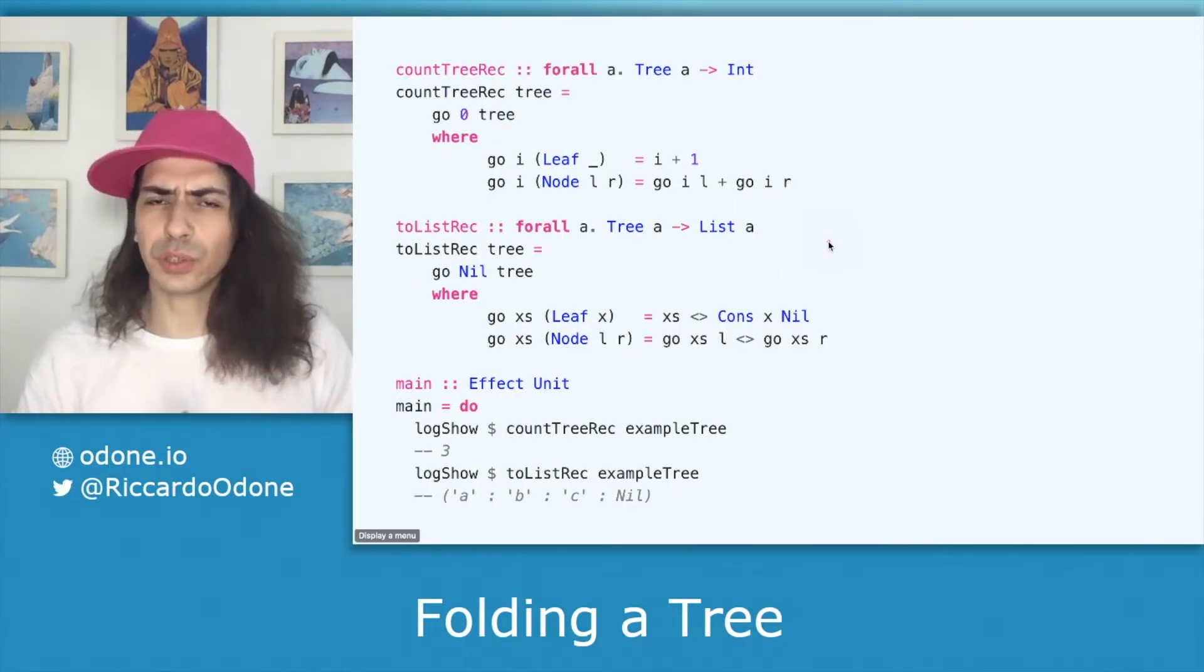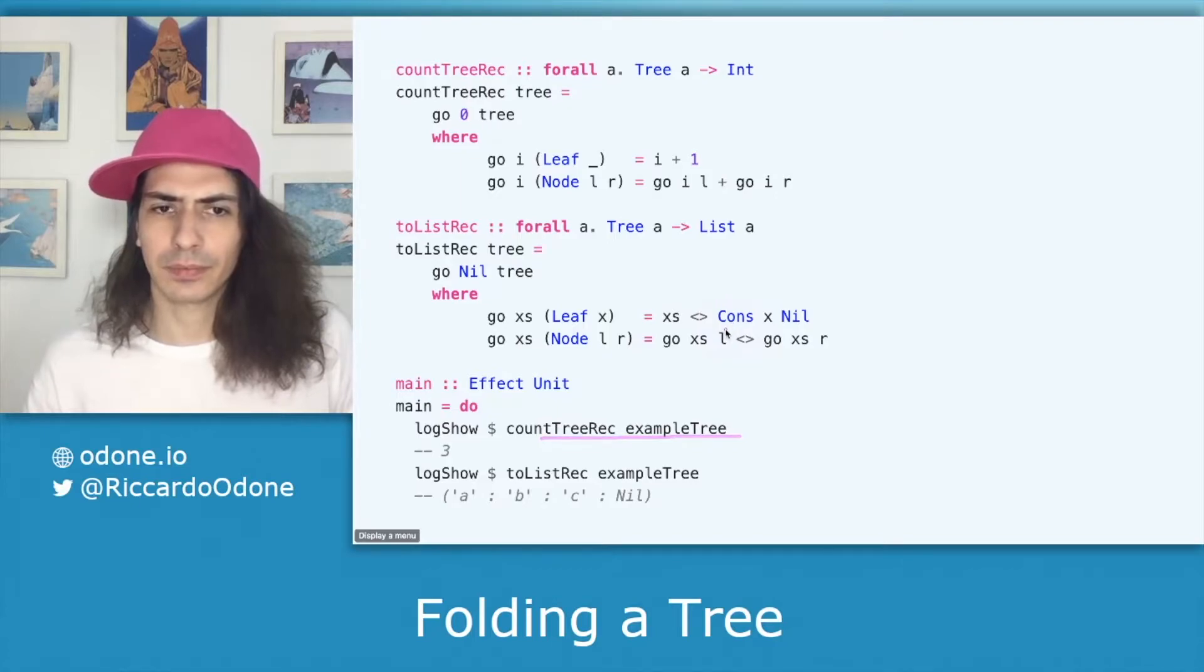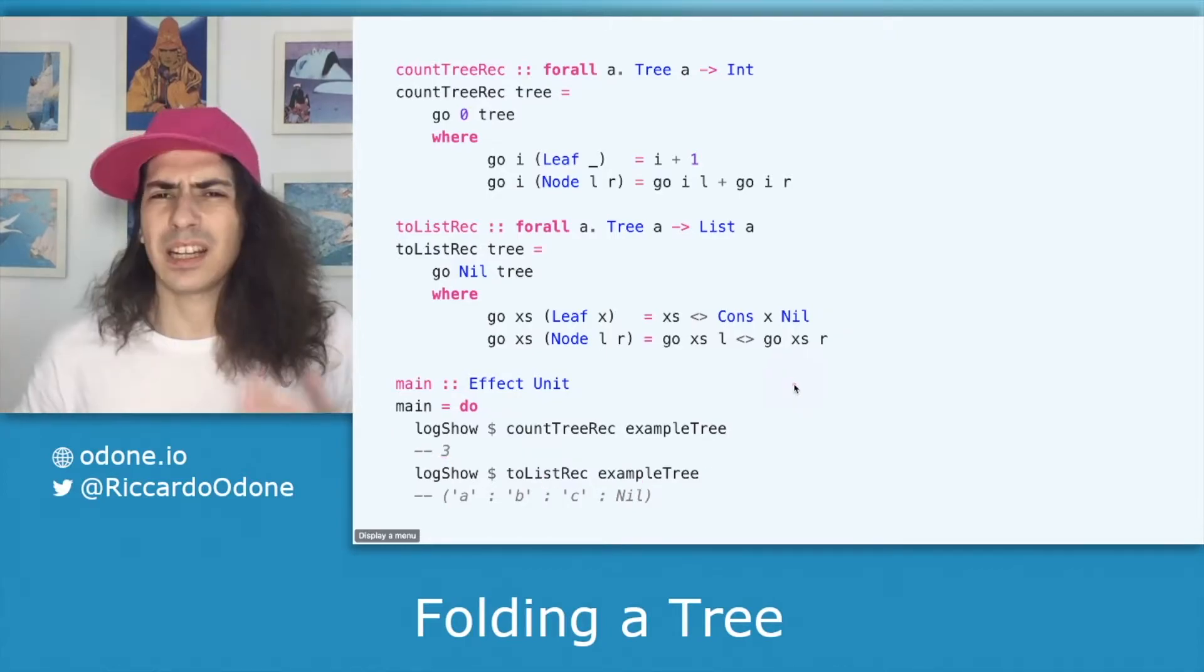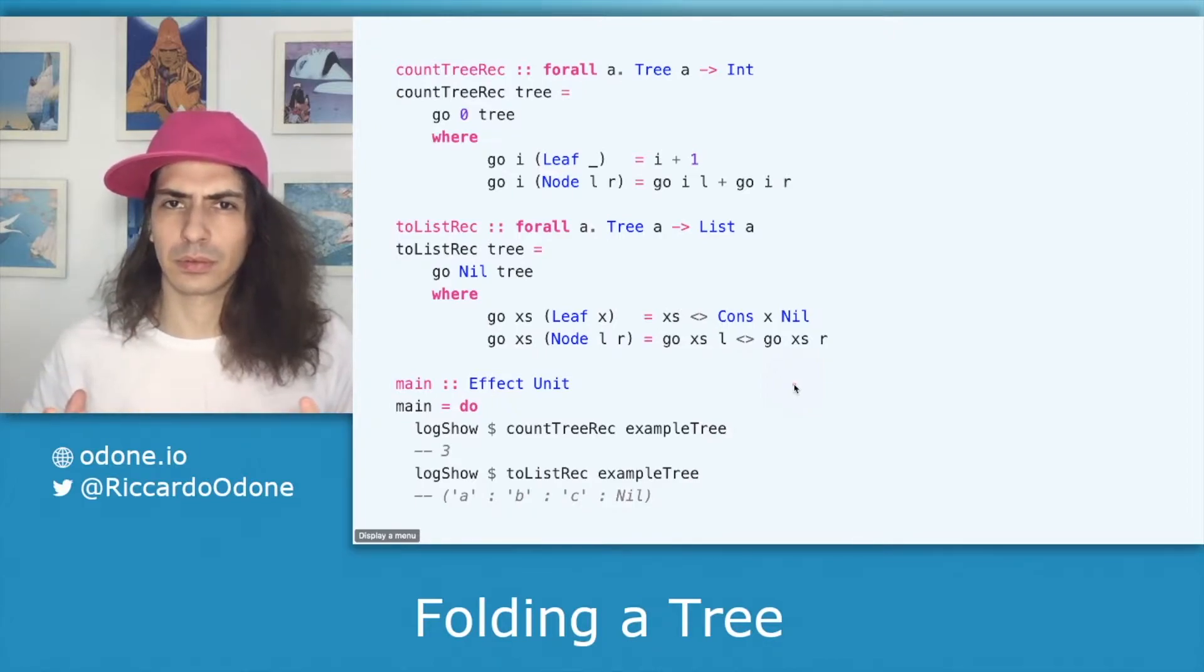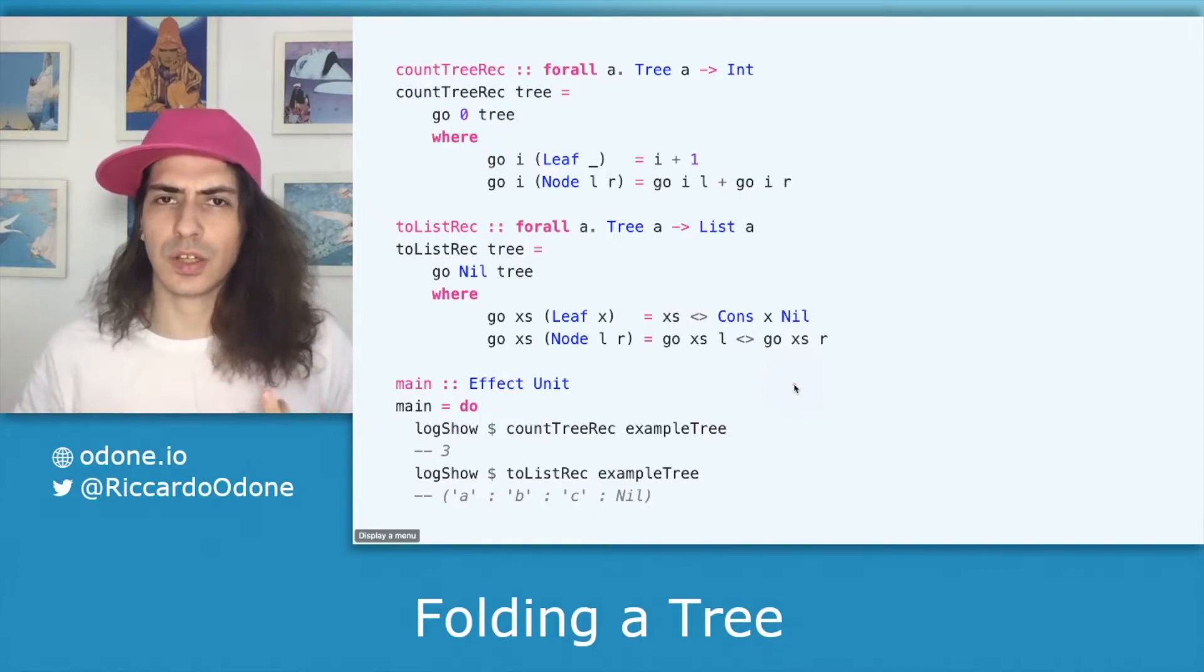We want to do a couple of things here. One is that we would like to be able to count the amount of leaves we have in the tree. In our case three. And also we would like to extract all of the characters into a list. In other words what we want to do is summarize the tree into a value. In the first case it's an integer. In the second case it's a list of characters.